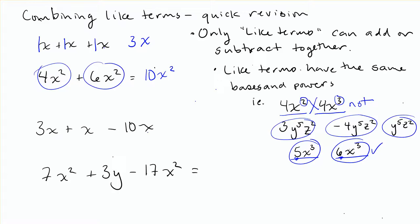3x plus x minus 10x. Again, x, x, and x are all like terms. I'm going to put in the invisible one. 3 plus 1 is 4, minus 10. Gets me negative 6x, and again the base stays the same, it's just x.